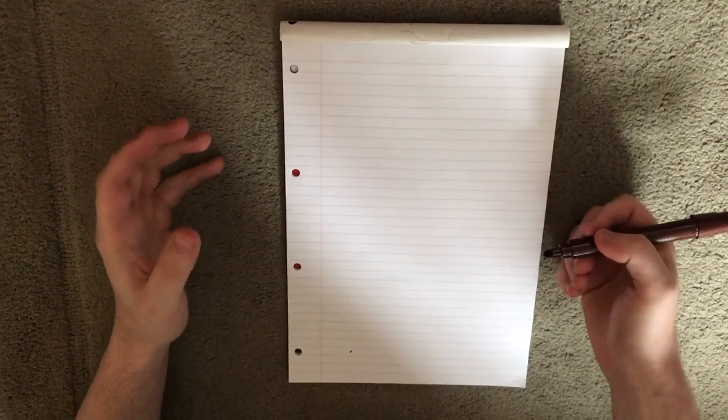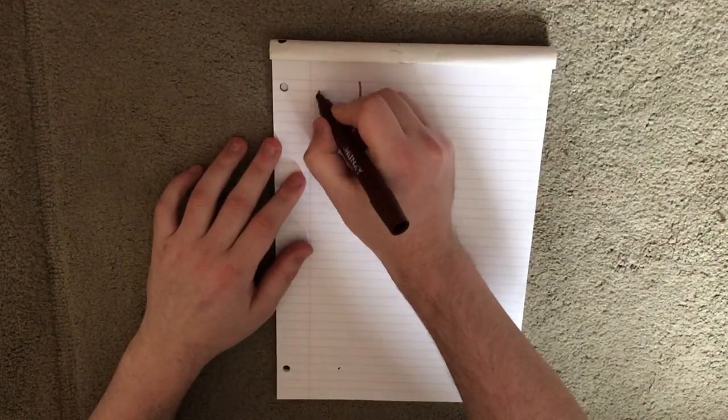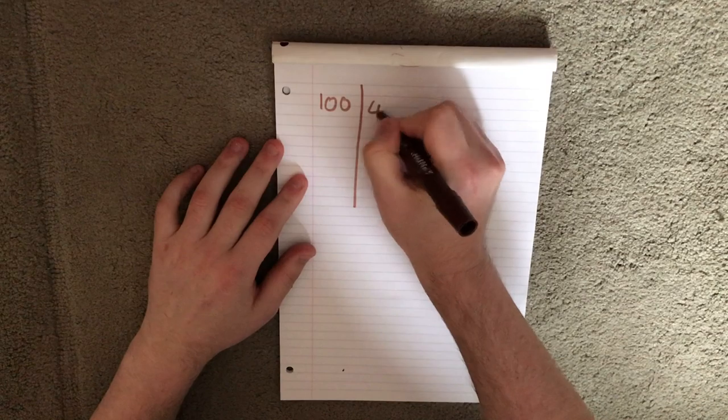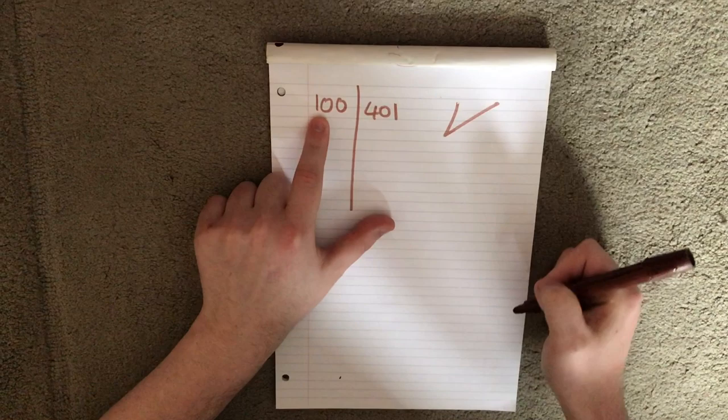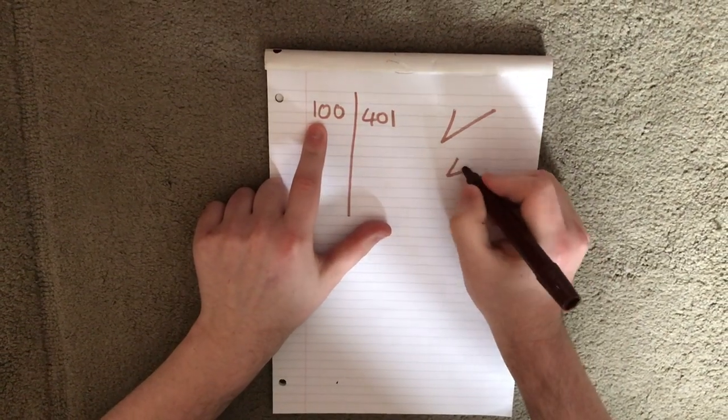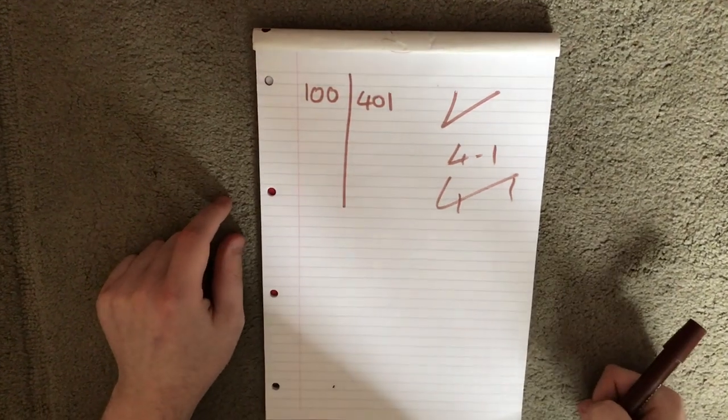So the first thing is you have to write things properly. If this is our score, we have to write out 100 then 401. Now you'll see a lot of people that will write 100 like this, so 401 might be this or even this when we write in short.